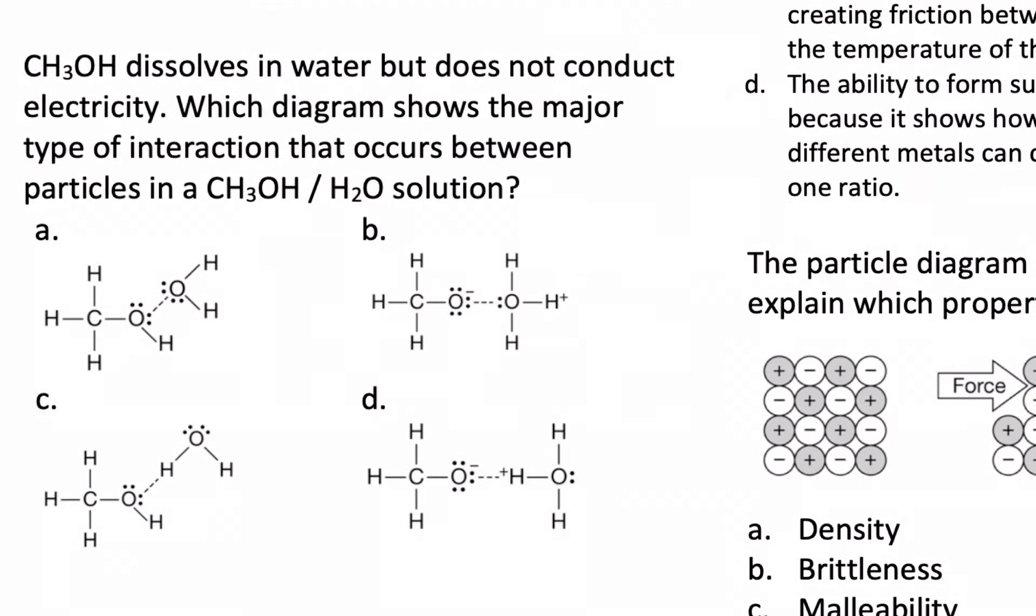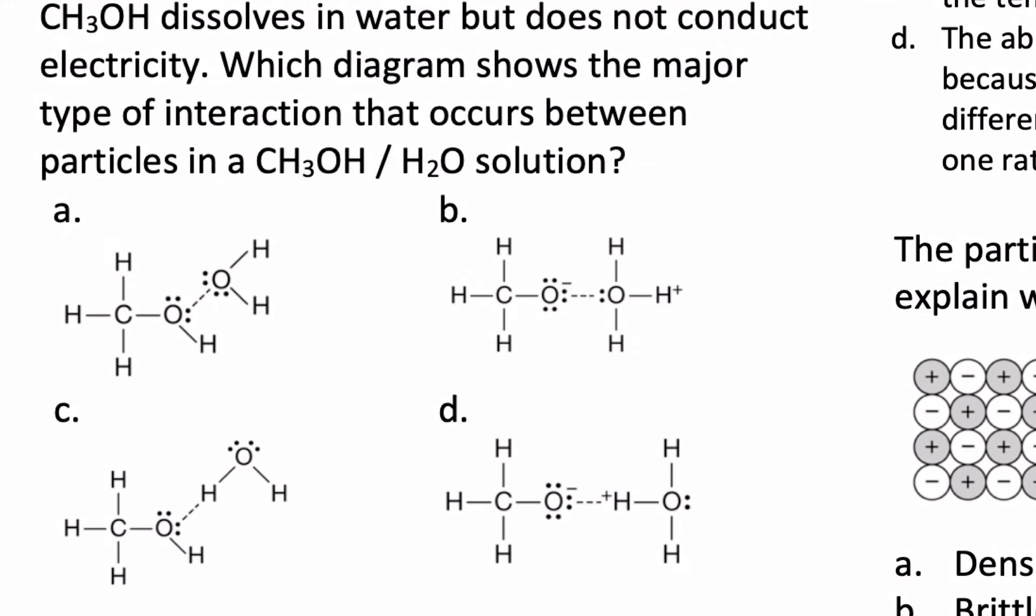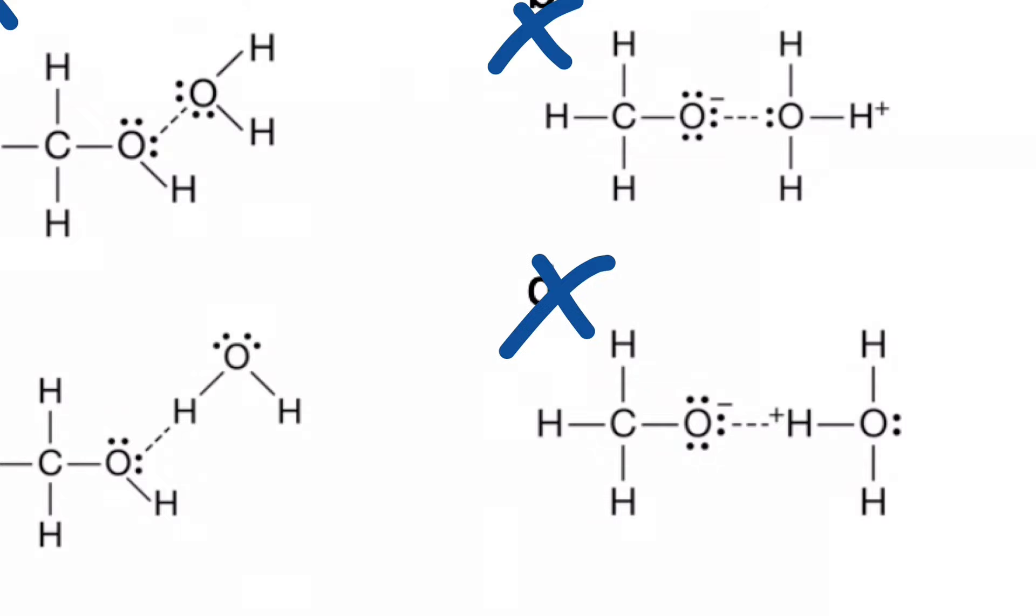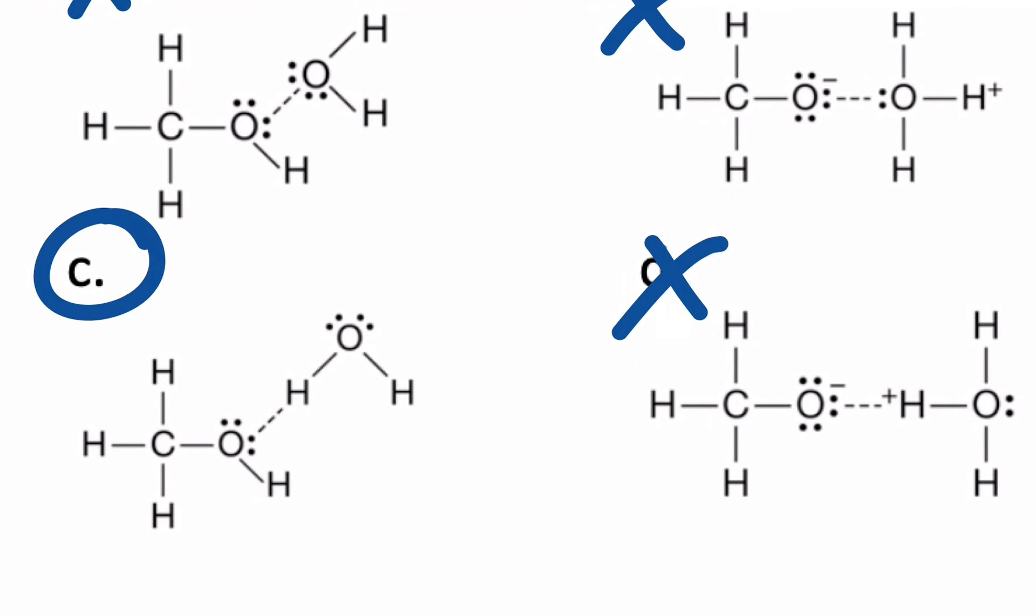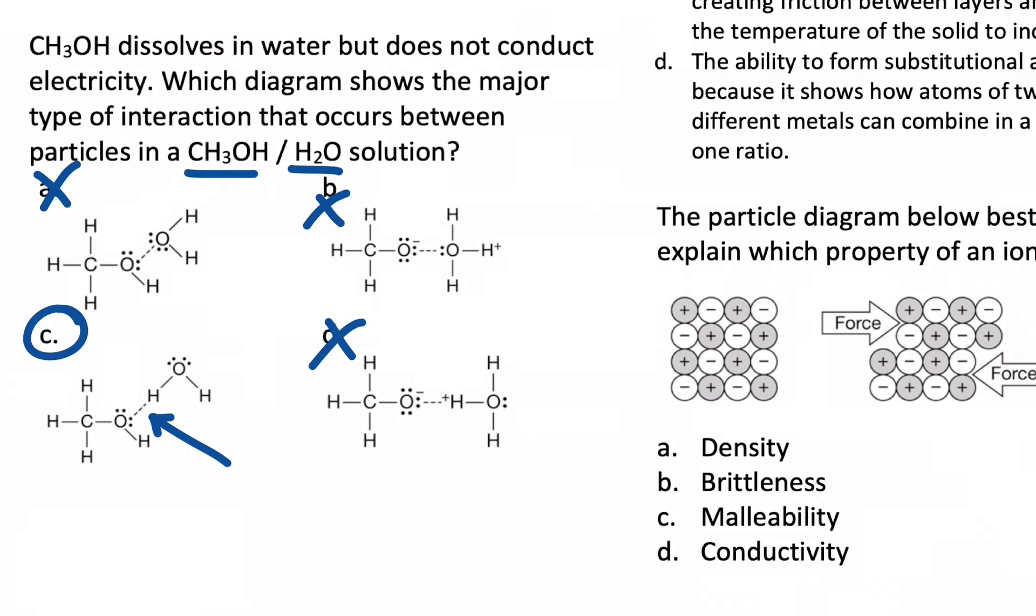All right, next. Methanol dissolves in water, but does not conduct electricity, which shows the major type of interaction that occurs between particles in methanol and water in the solution. Ah, so this is looking for the H-bonding of both of them, even though they're different molecules. And this is a good example of how different molecules can form intermolecular forces. They don't always have to be with another molecule of itself. It could be a different molecule altogether. So we're looking for a dashed line between a lone pair and a hydrogen. So A and B are out. D is out because you're not going to have charges. That would be some kind of acid-base reaction between those two. But C certainly looks like the best answer. There's a good H-bond between a lone pair on methanol and an H on a water molecule. Alternatively, it could have shown the H on methanol bonding with the lone pair on water. That would also be a correct drawing.